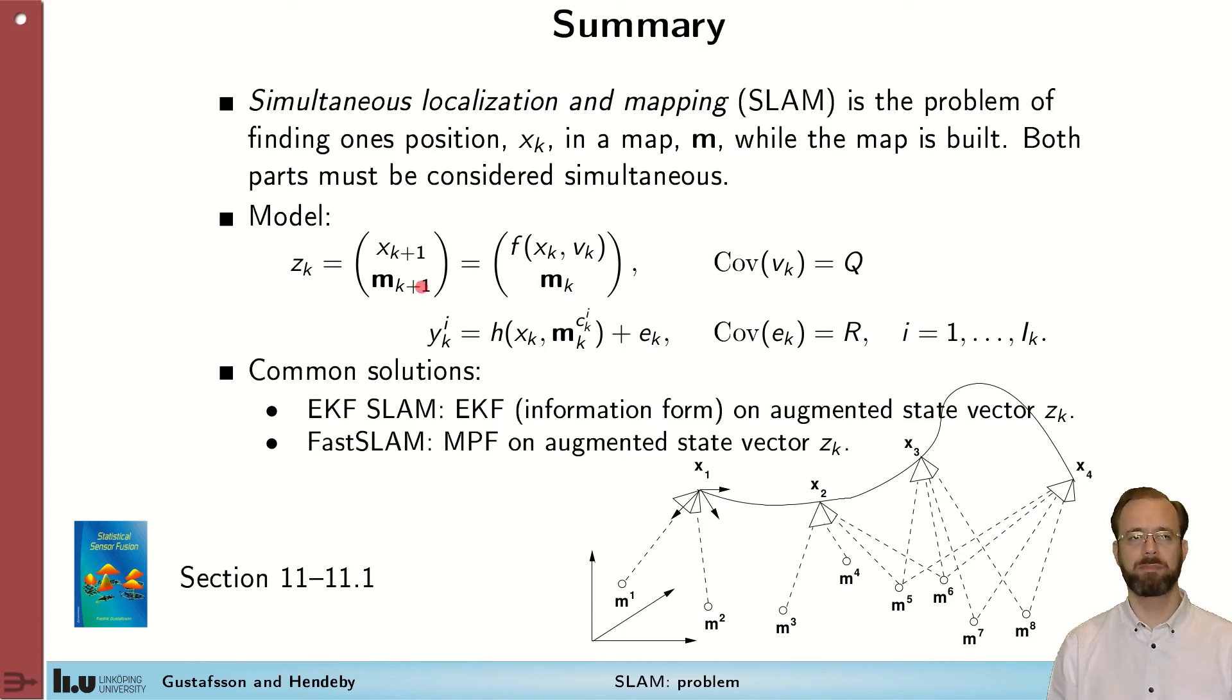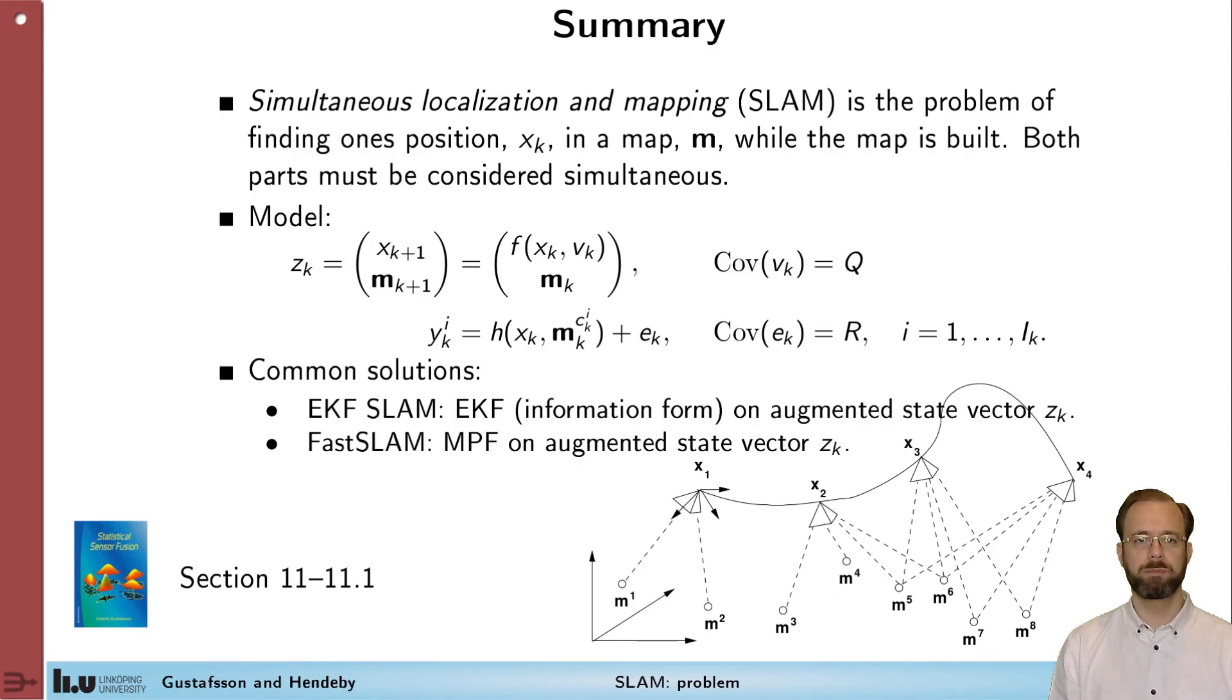Two common solutions to this problem that we will discuss more are the EKF SLAM, that uses the extended Kalman filter in different forms to solve this problem, and FastSLAM, which uses the marginalized particle filter to solve the problem defined by this model. To read more, to get a deeper introduction to SLAM, please consult section 11-1 in the textbook that introduces the SLAM problem.